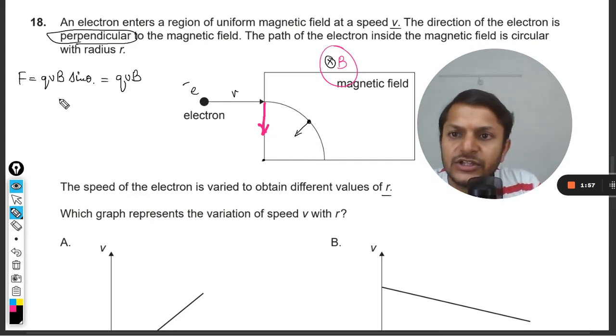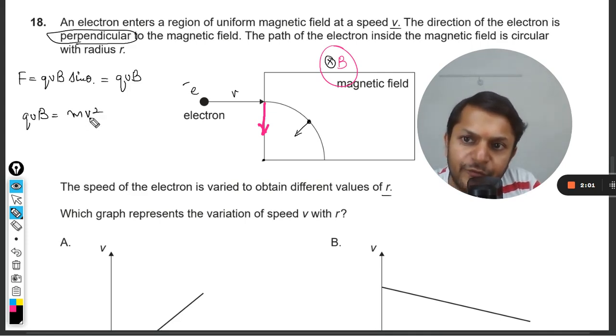The electron is going like this, so this force qvB will be equal to the centripetal force, which is mv²/r. From here we can find the value of r, so r will be equal to mv/qB.